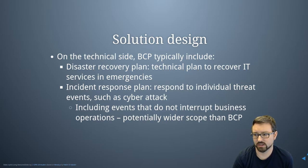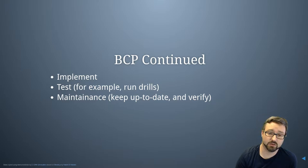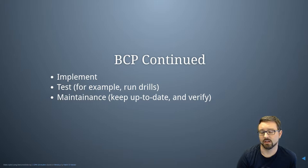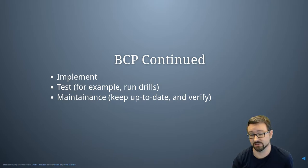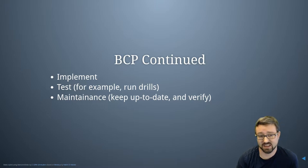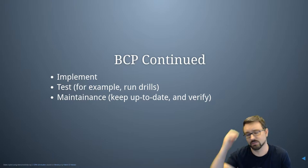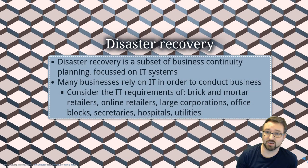The incident response plan includes events that don't interrupt business operations, potentially giving it a wider scope than the business continuity plan, though they are closely related. We then need to implement all those measures and test them — for example, running drills to make sure procedures can be followed successfully, like restoring backups. If you have backups but have never checked that you can restore them, you could be in for a nasty surprise. Business continuity plans must also be maintained and verified — if procedures gather dust and rely on roles that have since been vacated, those procedures need to be updated.